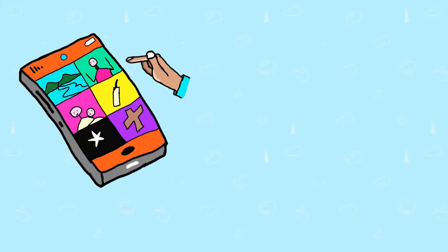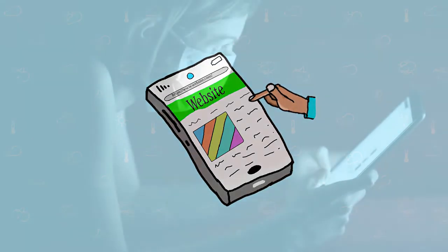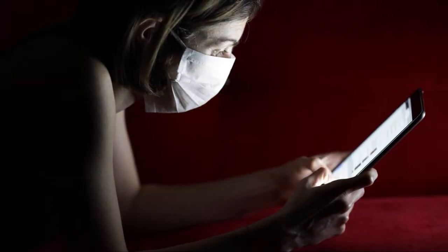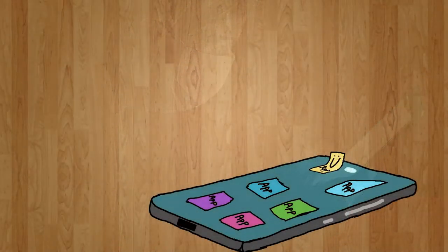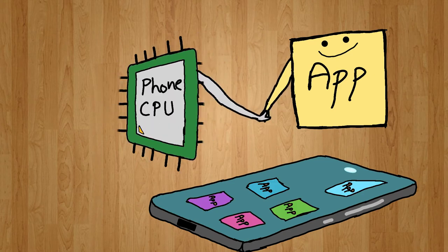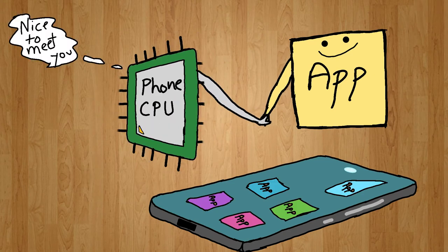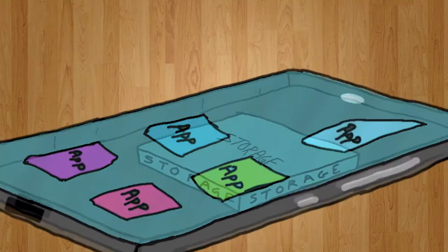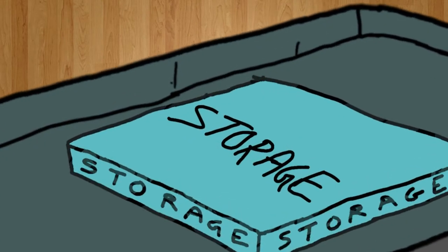But when we open that app or visit that website again, it doesn't take that much time. This doesn't happen because the phone's processor gets familiar with that app or website, but because of the reserved sections in our phone storage that is used for cached data.